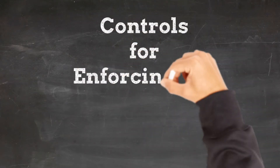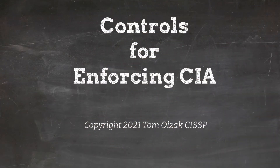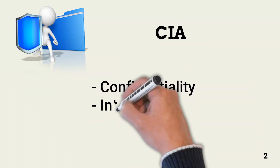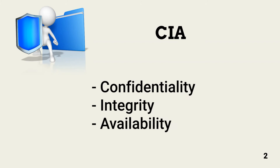In this lesson, we look at the elements of the CIA security triad based on the CISSP CBK and basic controls needed to achieve CIA objectives. According to the CISSP CBK reference, information security administrative, physical, and logical controls can be evaluated based on how well they affect confidentiality, integrity, and availability — the CIA — of information resources.